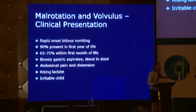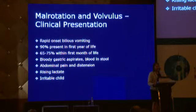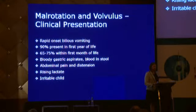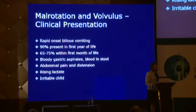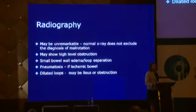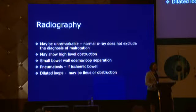Clinically, malrotation and volvulus presents with rapid onset bilious vomiting — 90% within the first year of life, most within the first month. There may be bloody gastric aspirate, blood in the stool, abdominal pain and distension, and with ischemic changes, rising lactate. They also present as an irritable child, though not every irritable child has malrotation or volvulus. X-ray is pretty much useless unless you're looking for free air or pneumatosis, but if you're truly suspecting malrotation and volvulus, you need further imaging.